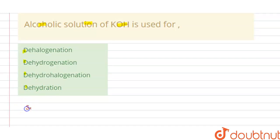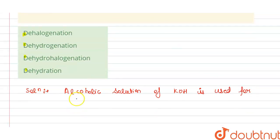So the solution to this question is: we know that alcoholic solution of KOH is used for dehydrohalogenation.